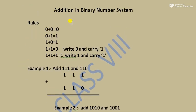Next topic: Addition in Binary Number System. For binary addition, the base is 2 and it uses only 0 and 1. The rules to remember are: 0 + 0 = 0; 0 + 1 = 1; 1 + 0 = 1; 1 + 1 = 0 (write 0, carry 1); and 1 + 1 + 1 = 1 (write 1, carry 1).